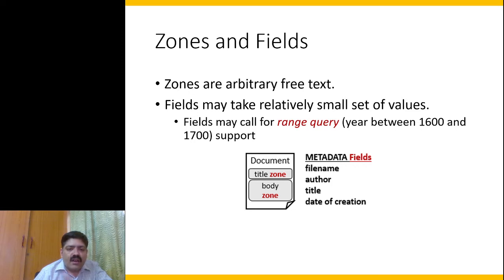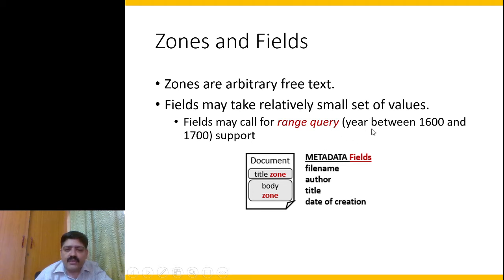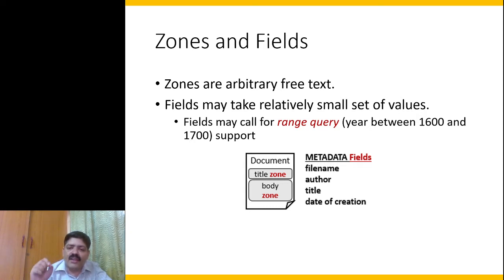Zones are arbitrary free text. Fields may take a relatively small set of values. Fields are especially useful in range queries — for example, if the query asks for a year between 1600 and 1700. Such queries are called range queries, and fields are extremely useful in answering them.